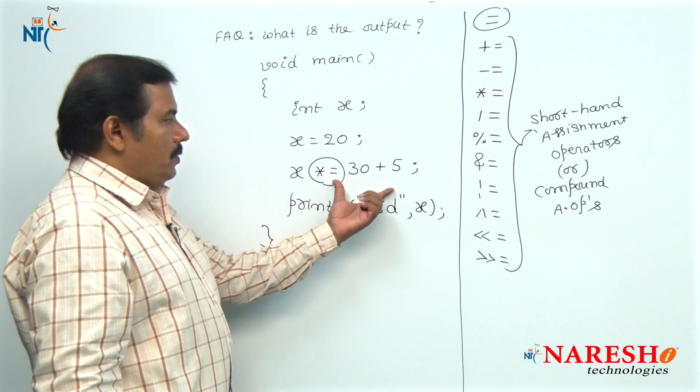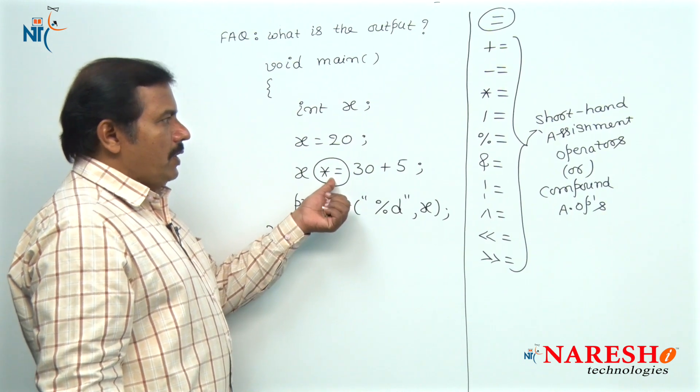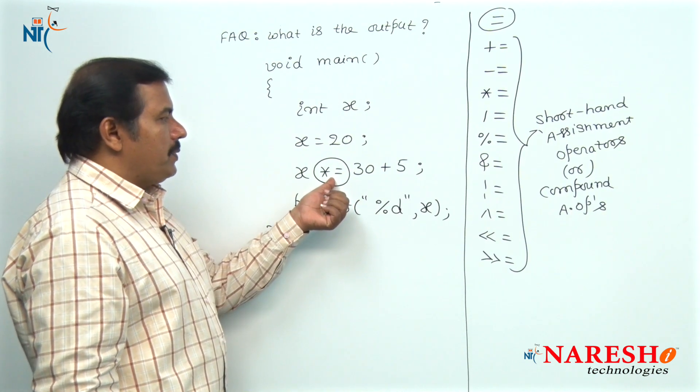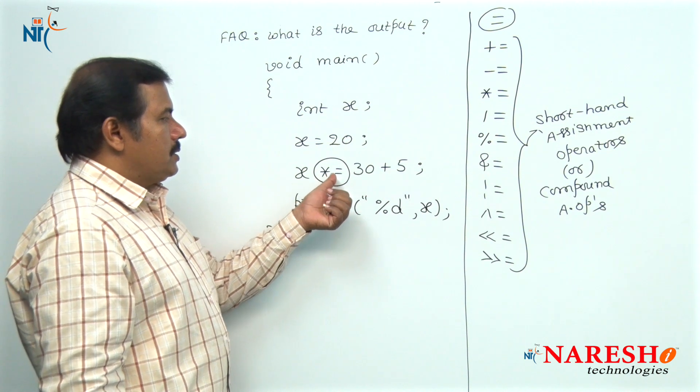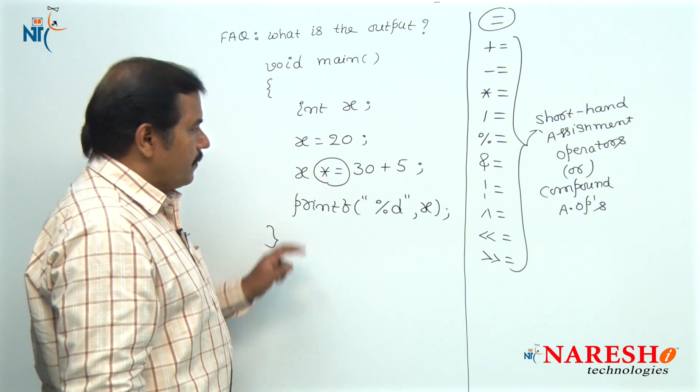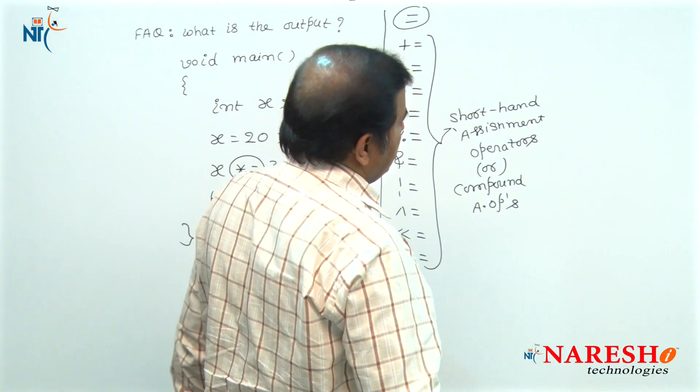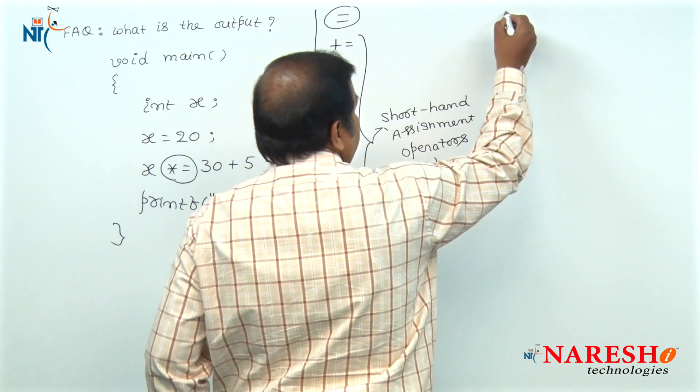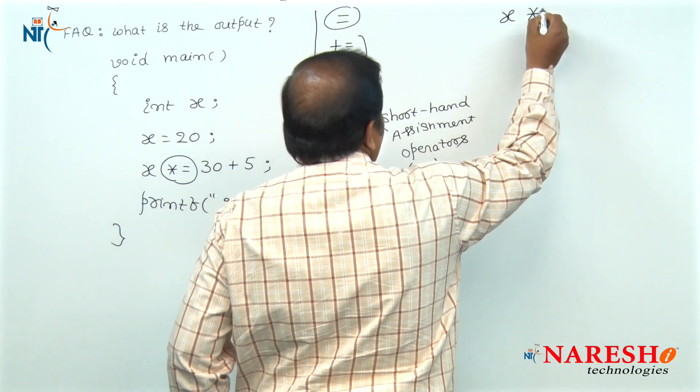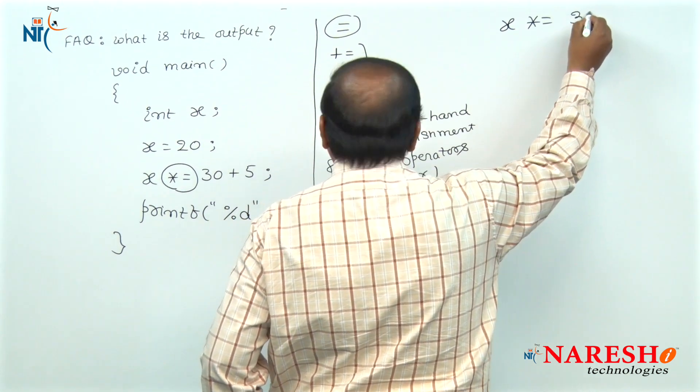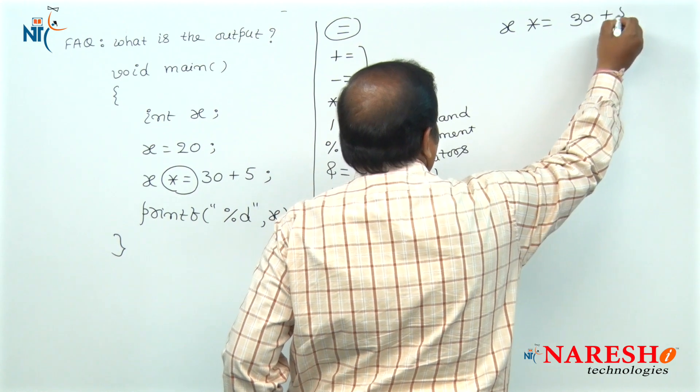In this code, the operator, one of the shorthand assignment operators we used is star assignment. What is the evaluation of this assignment expression? This is a given expression: x star assignment 30 plus 5.